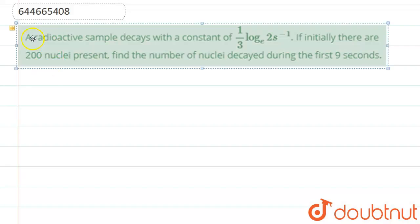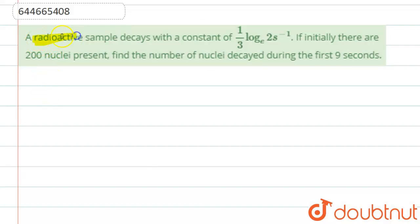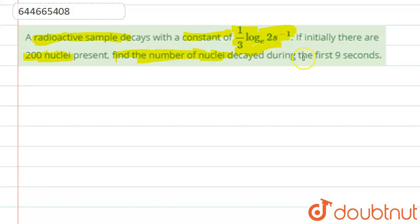Hello students. The question says that a radioactive sample decays with a decay constant of (1/3) · ln 2 seconds inverse. Initially there were 200 nuclei present. We have to find the number of nuclei that decayed during the first 9 seconds.